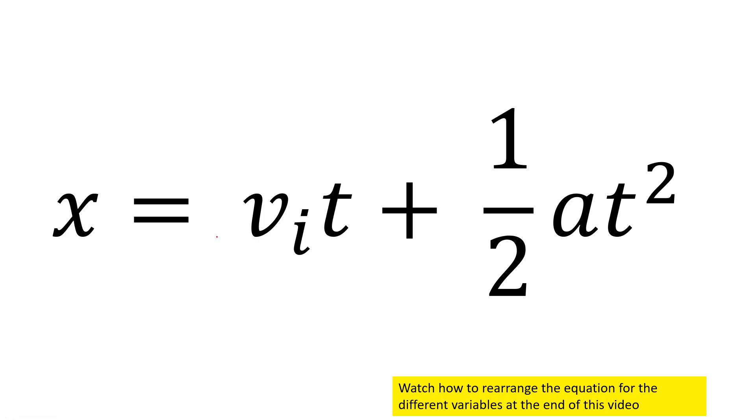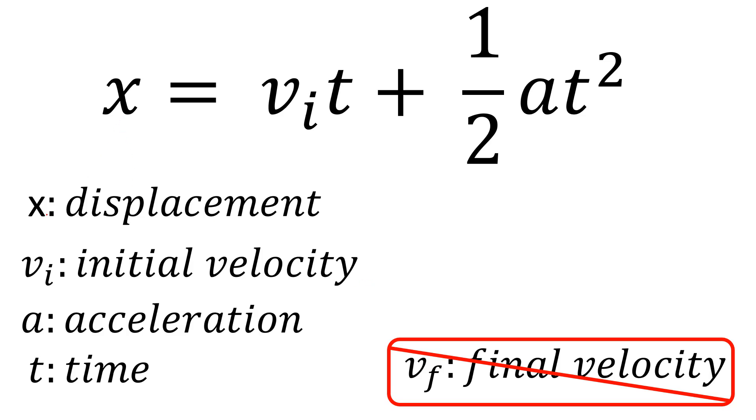In this video we're going to look at the equation x equals v_i t plus one half a t squared. We have x for displacement, v_i for initial velocity, a for acceleration, and time appears twice, once squared and once not. We don't have a final velocity, so anything that requires a final velocity, whether it's a given or an unknown, we aren't going to be able to use this equation.